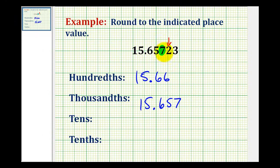Notice how by leaving this digit as a seven and leaving off these digits, we did decrease the value of this number, and therefore we did round down. We have fifteen and six hundred fifty-seven thousandths.